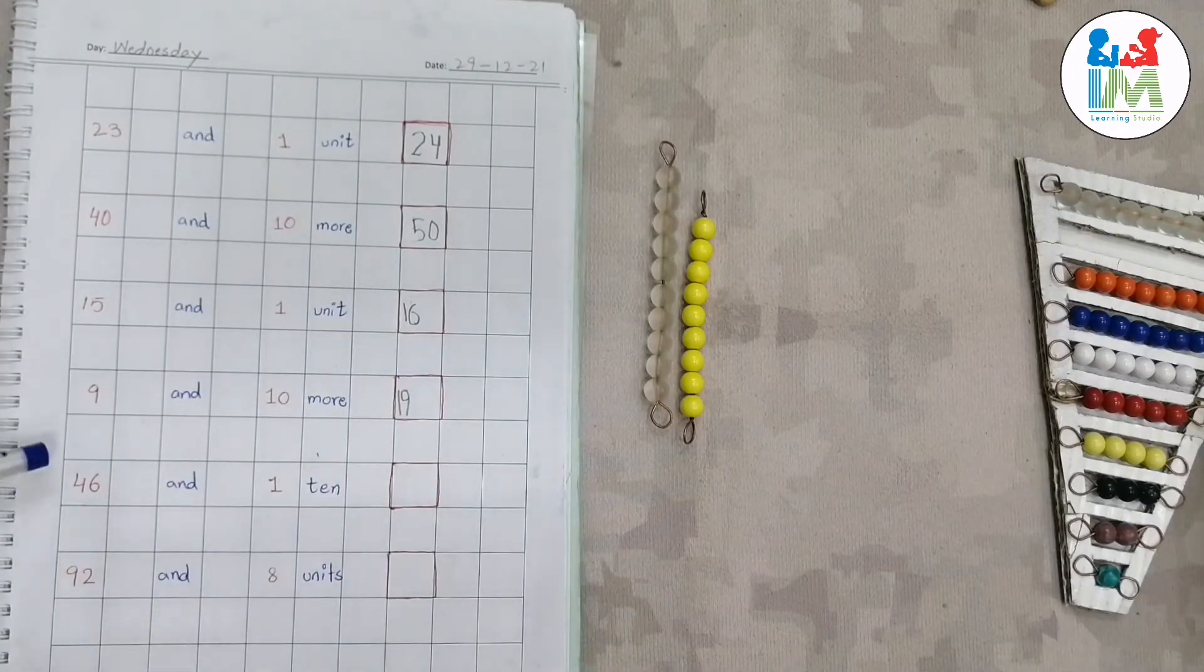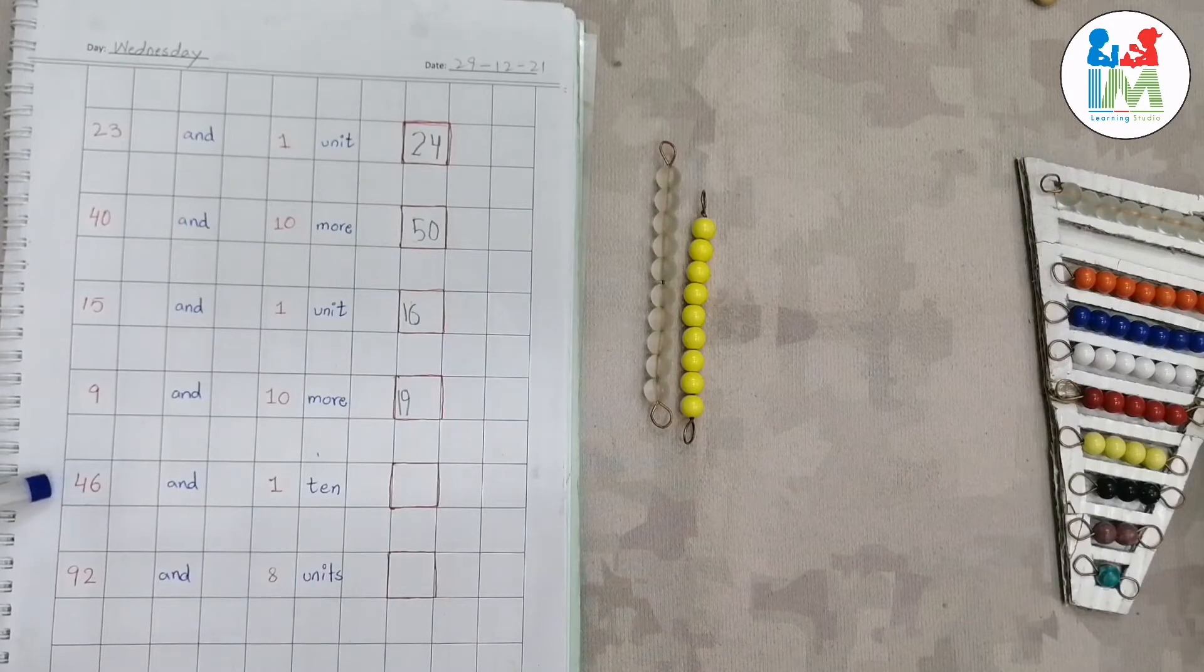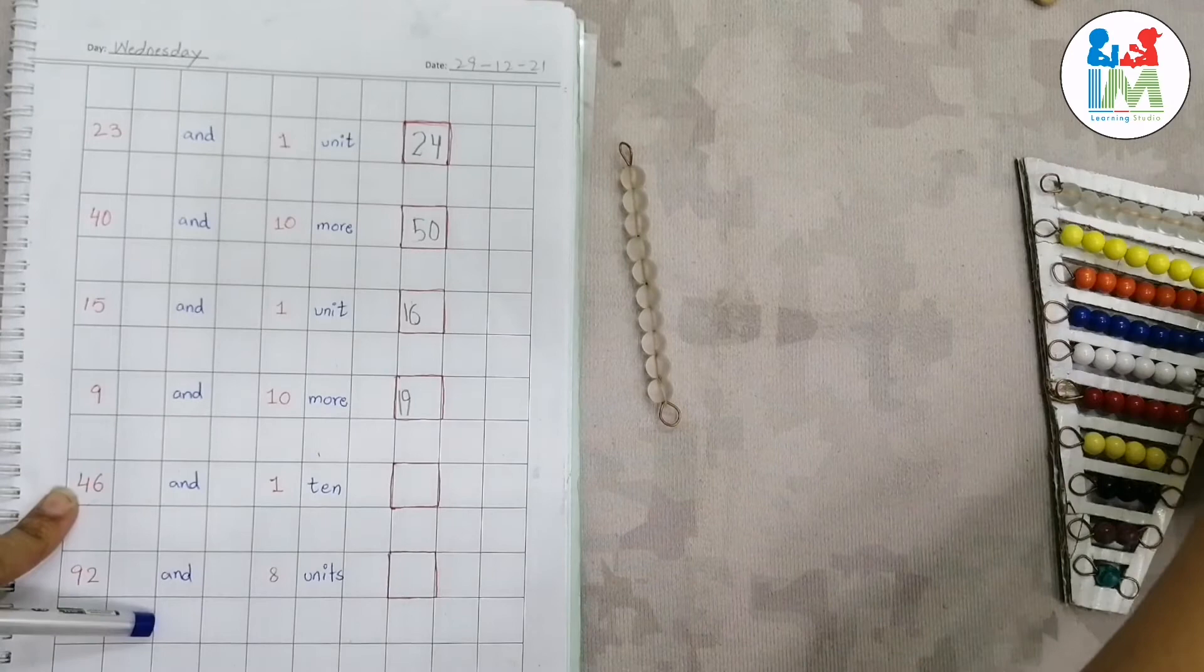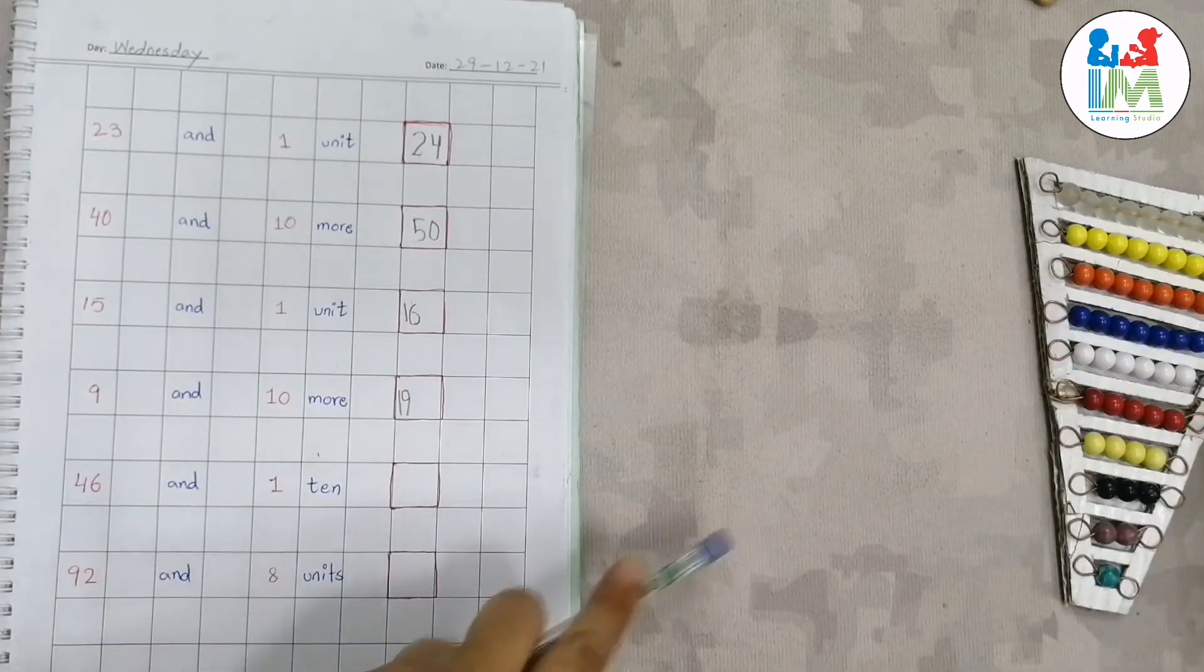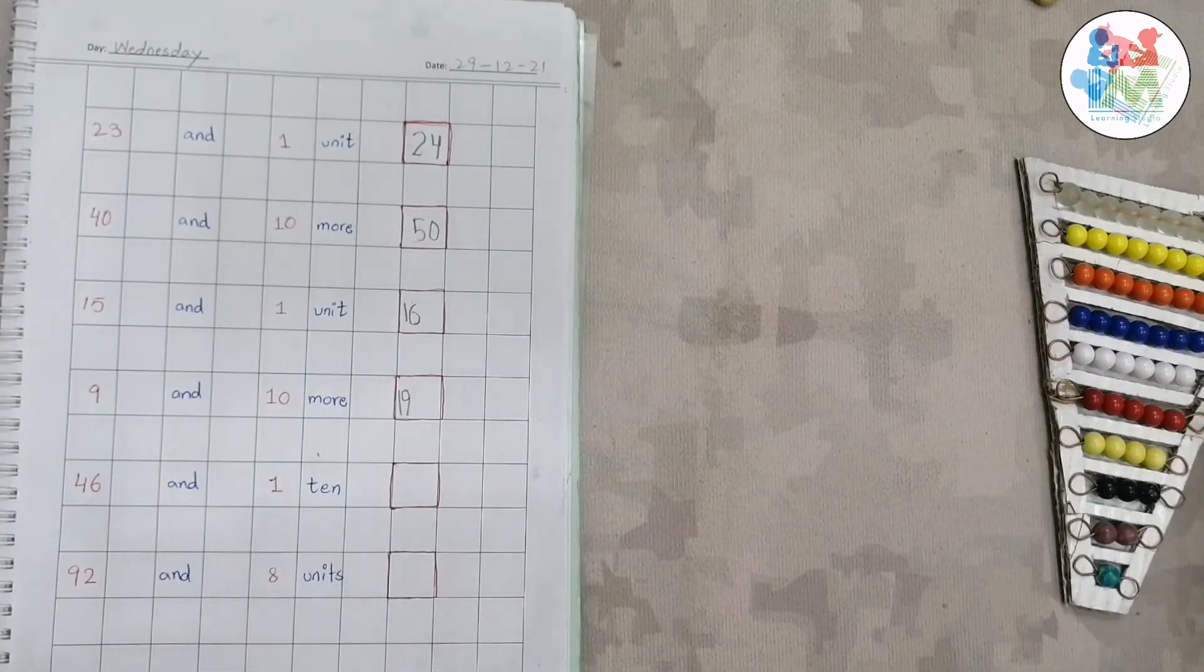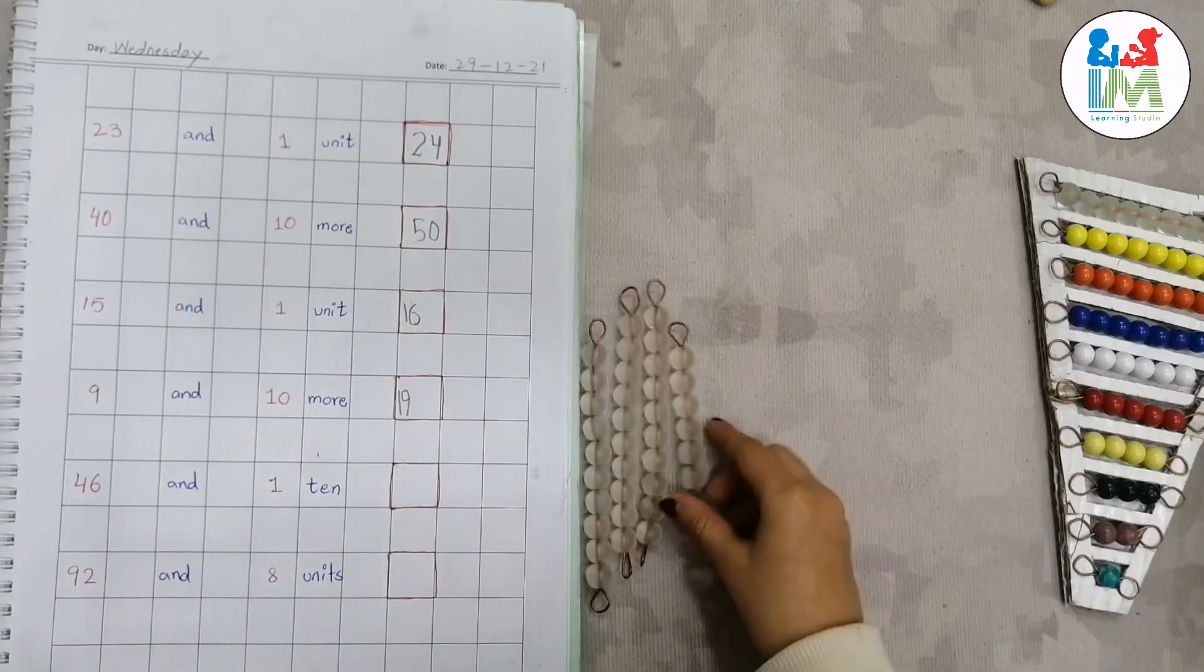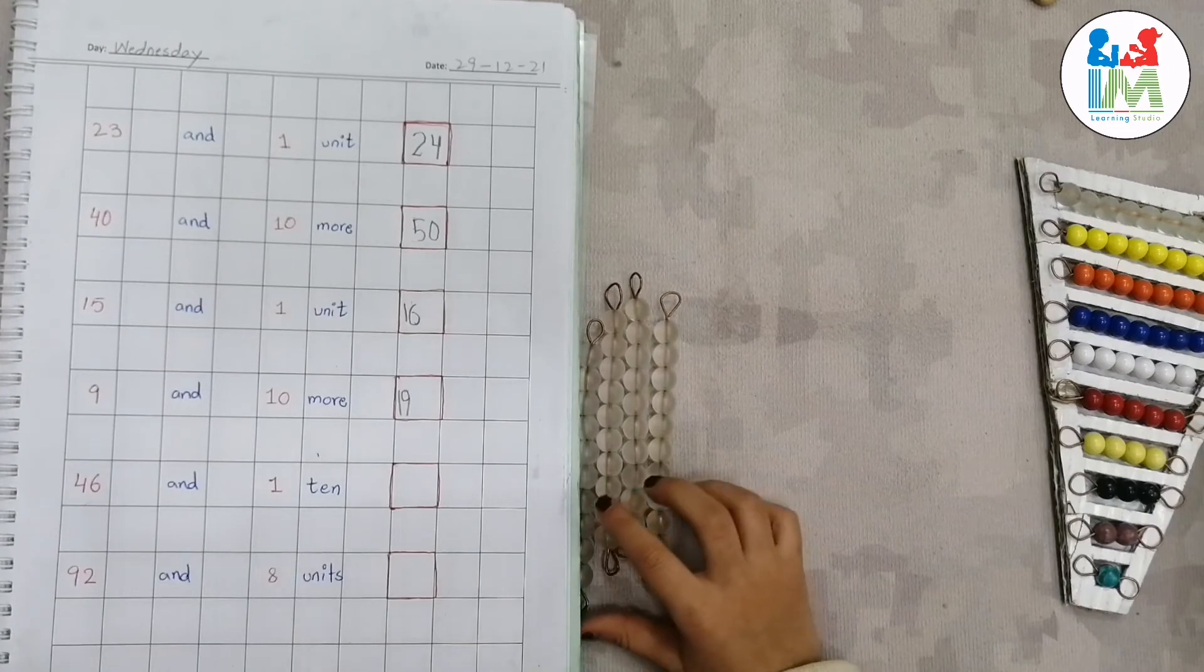Yes, okay, next, what number here? What number here? 46. Six. Can you make here 46? Yes, four tens and how many units in 46? Six. Okay.